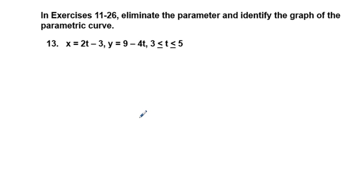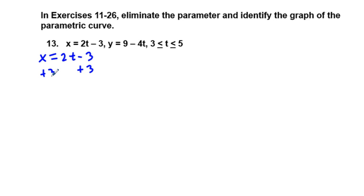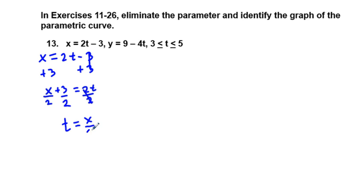Next odd number problem, 13. We have the parametric equation x equals 2t minus 3, and y equals 9 minus 4t. In this case, we probably have similar degrees of difficulty. I'm going to solve the left equation to get a y equals format on the right. So with x equals 2t minus 3, we add 3 to both sides. We have x plus 3 equals 2t, and then dividing by 2, we have t equals x over 2 plus 3 halves.